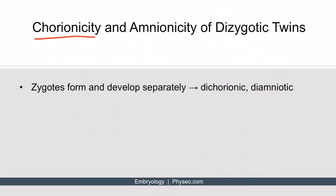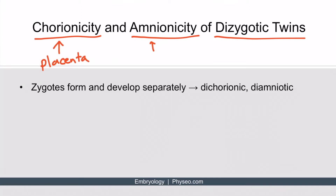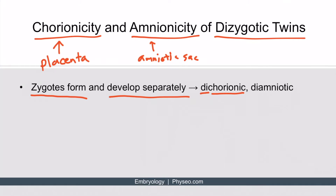Now let's discuss chorionicity and amnionicity of dizygotic twins. A chorion refers to the placenta; the amnion refers to the amniotic sac. The question is whether the twins will share a placenta and whether they will share an amniotic sac — and they don't share either. The zygotes form and develop separately, so they will be dichorionic (two placentas) and diamniotic (two amniotic sacs). This is always the case for dizygotic twins.